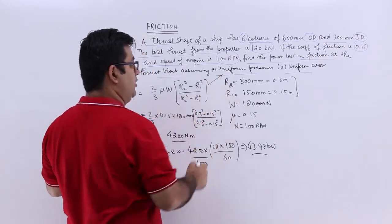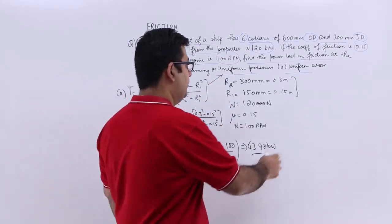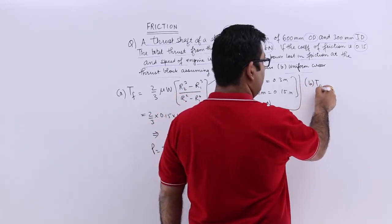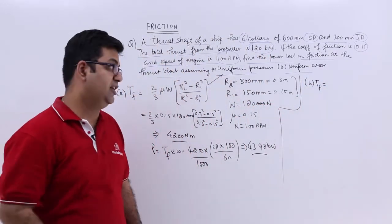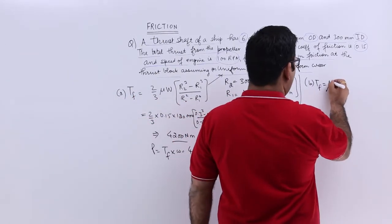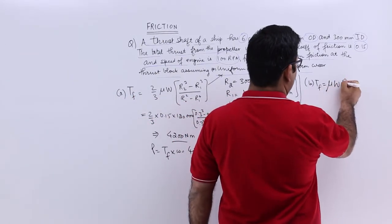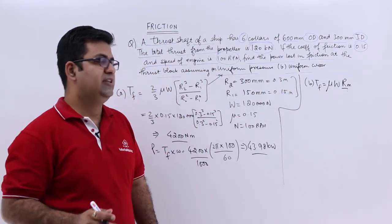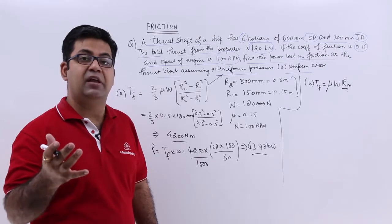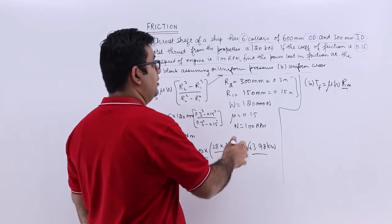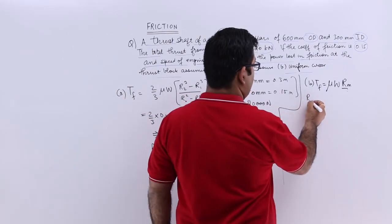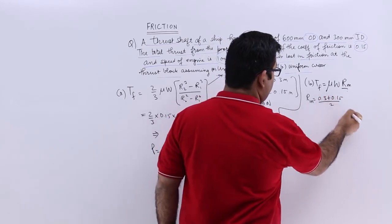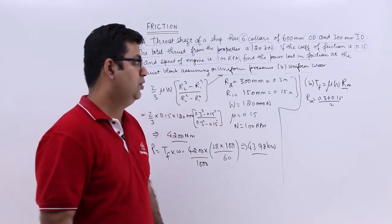For uniform wear, the torque to overcome friction is mu W into rm, not 2 just rm. So this rm is the mean radius. Your rm would be 0.3 plus 0.15 upon 2, that is 0.225.